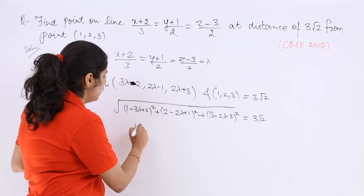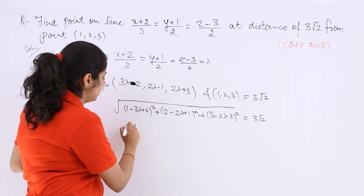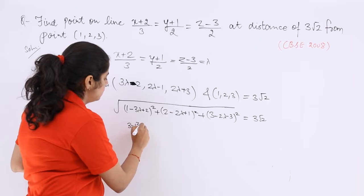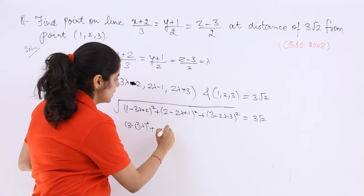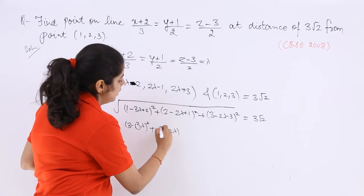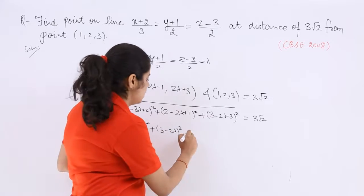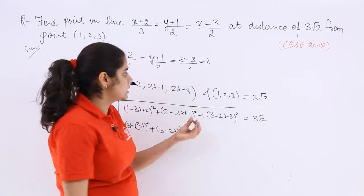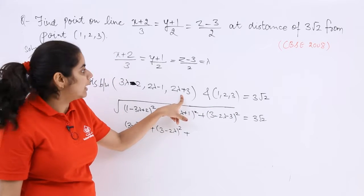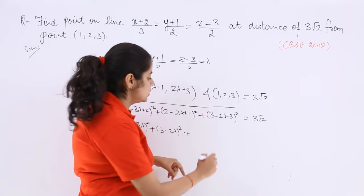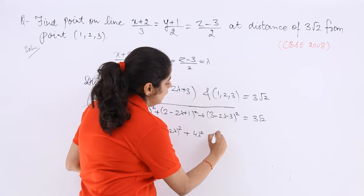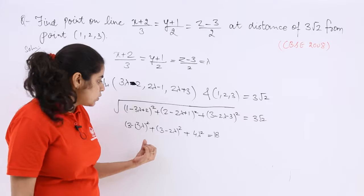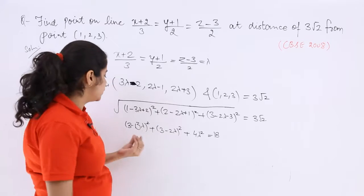So 3 minus 3 lambda whole square plus 3 minus 2 lambda whole square plus, since this was 3 and here it is minus, so this will get cancelled. So plus 4 lambda square is equal to 9 into 2, which is 18. Now let's open the brackets up and let's solve it.